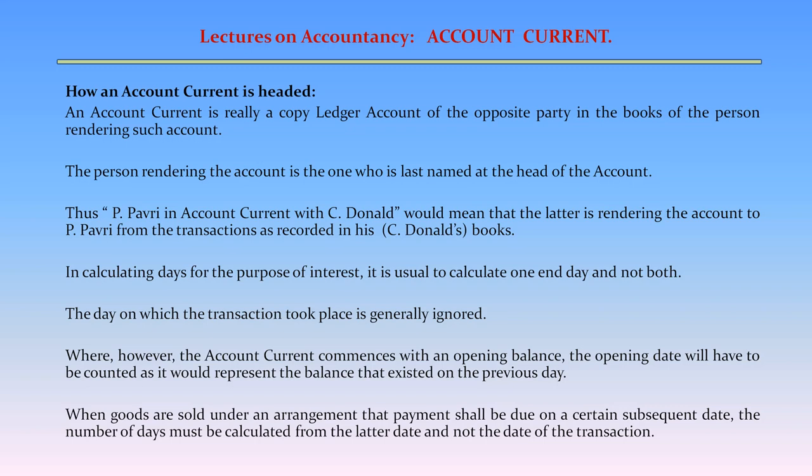In calculating days for the purpose of interest, it is usual to count one end day and not both. The day on which the transaction took place is generally ignored. However, where the account current commences with an opening balance, the opening date will have to be counted as it would represent the balance that existed on the previous day. When goods are sold under an arrangement that payment shall be due on a certain subsequent date, the number of days must be calculated from the latter date and not the date of the transaction.